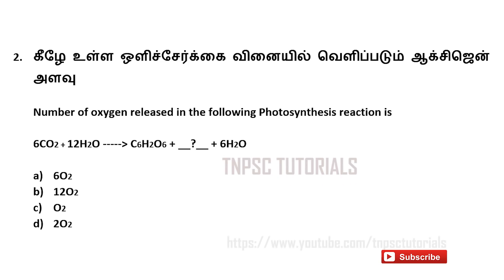Second question. The number of oxygen released in the following photosynthesis reaction: 6CO2 + 12H2O gives out C6H12O6 + dash + 6H2O. Options are A) 6O2, B) 12O2, C) O2, D) 2O2, and the answer is A) 6O2.